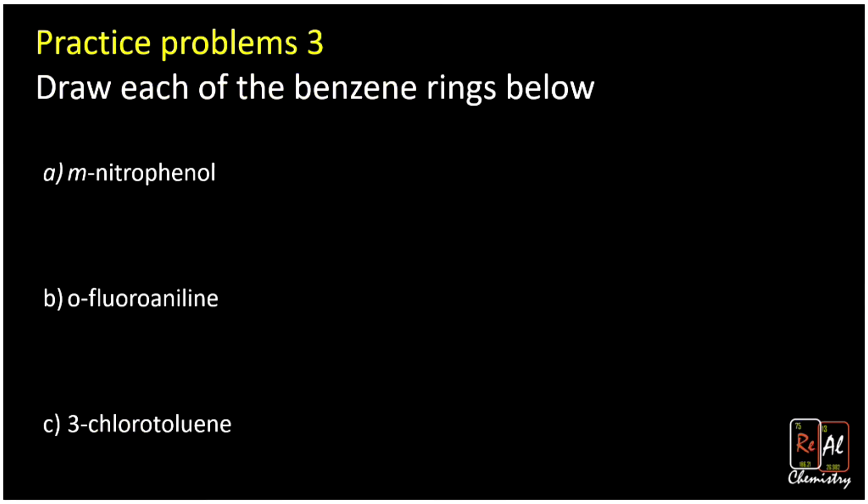All right, one last set of practice problems here - we're going to draw each of our rings. Notice here we have our meta, ortho, and para stuff, so I'm going to go ahead and write out our little key. We want to use our ROMP key - remember that goes with 1, 2, 3, and 4. So meta-nitrophenol. Phenol has our OH group up top, so we're going to go ahead and write that. We're going to put our little circle here to let everybody know that's a benzene ring. By the way, if you just leave this off, that's now an alcohol on a cyclohexane, so that would be cyclohexanol. Really important that you either put the alternating double bonds or you put the circle - if you don't, it's actually wrong. Now this is meta-nitrophenol, so meta recall means that we have our next guy at our third position. So we have 1, 2, 3, so right there we're going to have a nitro group. Good bet this guy would also be explosive because of that nitro group.